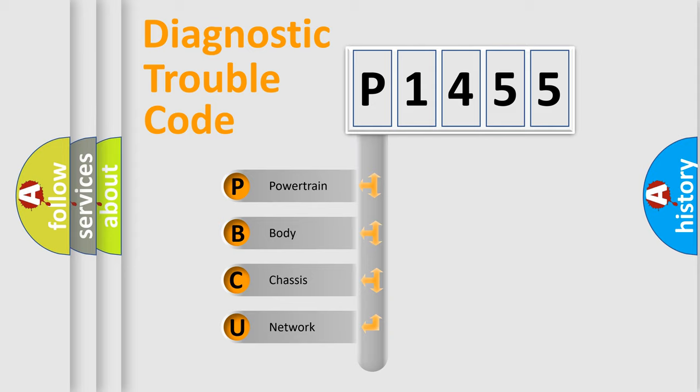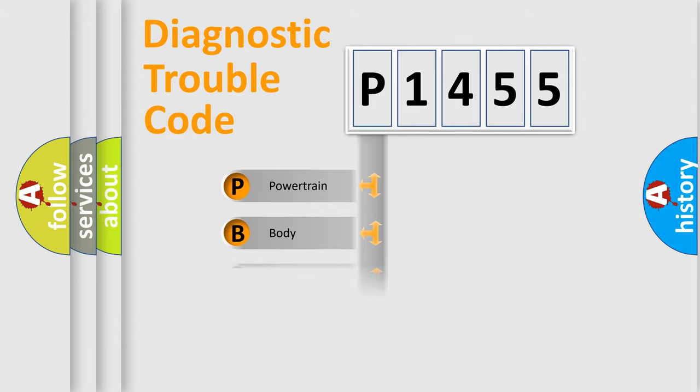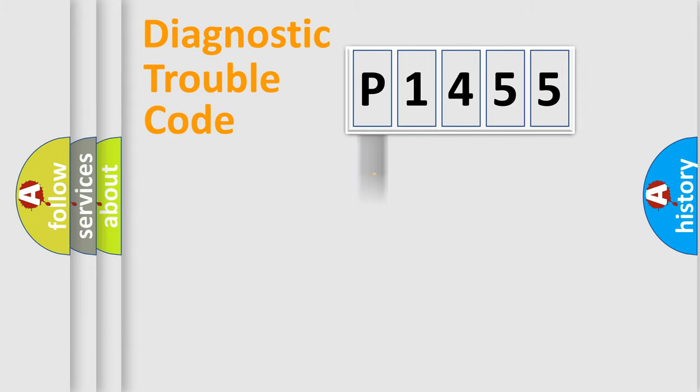We divide the electric system of an automobile into four basic units: Powertrain, Body, Chassis, and Network.